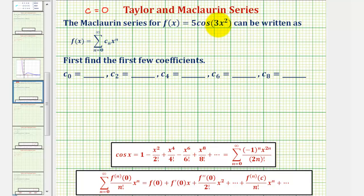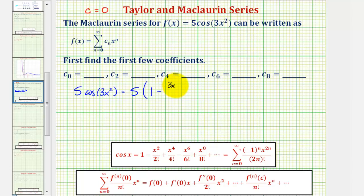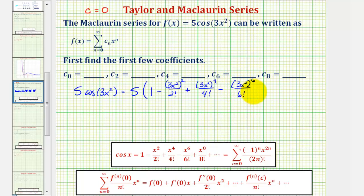So to find the Maclaurin series for our function, we can substitute 3x² for x, then multiply by five. So 5cos(3x²) would be equal to five times: substituting 3x² for x, we would have one minus, instead of x squared we'd have (3x²)², divided by two factorial, plus instead of x to the fourth we'd have (3x²) to the fourth, divided by four factorial, minus instead of x to the sixth we'd have (3x²) to the sixth, divided by six factorial, and so on.